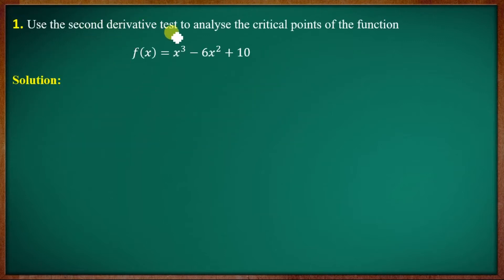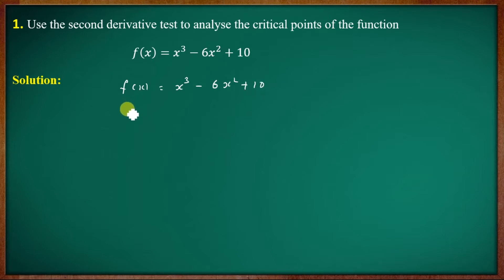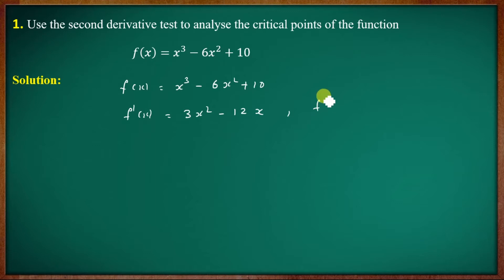First question: use the second derivative test to analyze the critical points of the function, then determine the local maximum and local minimum. The function is f of x equal to x cube minus 6x square plus 10. The first derivative is f dash of x equal to 3x square minus 12x.